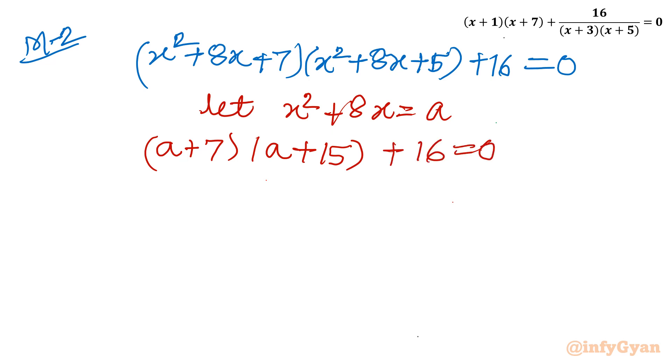Multiply, a times a is a square, a times 15 is 15a, 7 times a is 7a, so 22a. 15 plus 7 is 22, plus 15 times 7 is 105, plus 16 equal to 0.